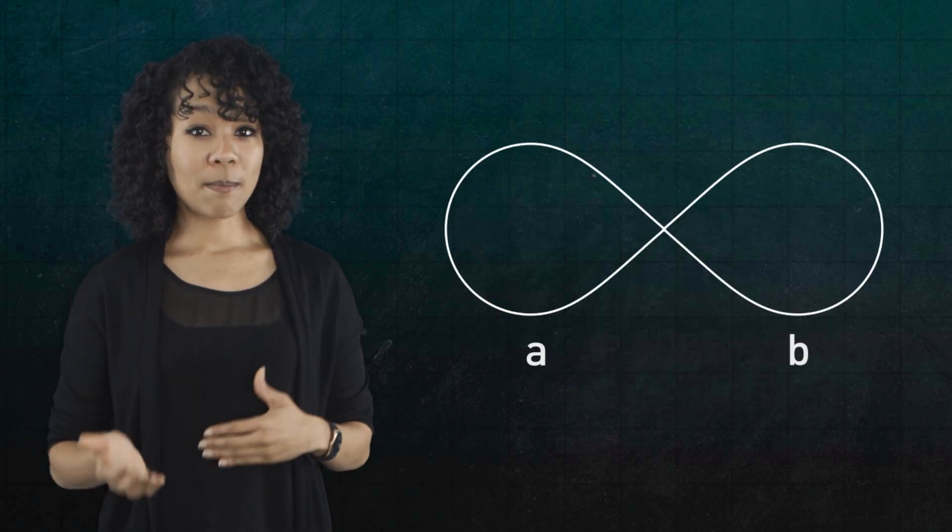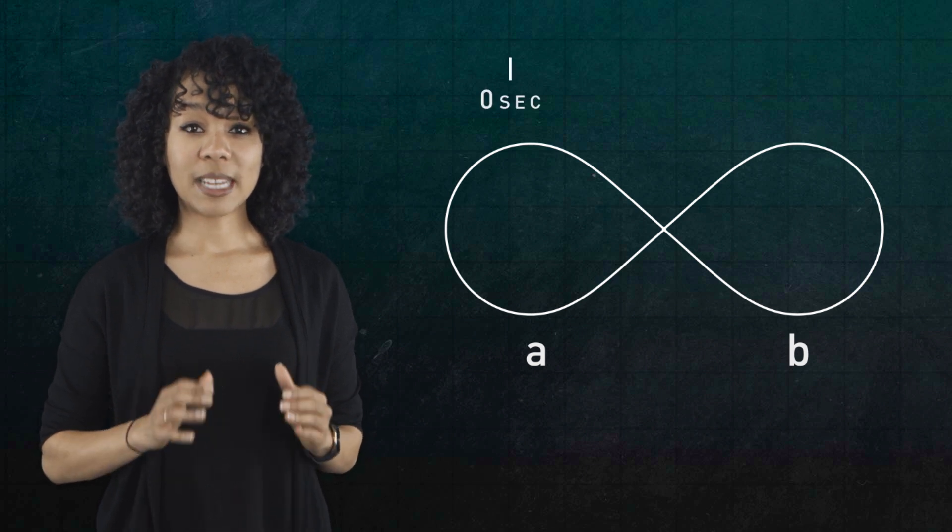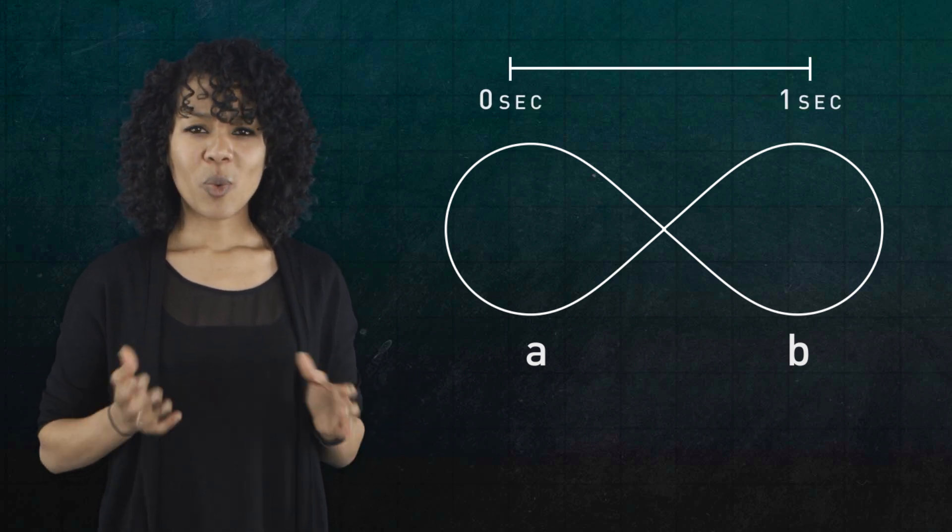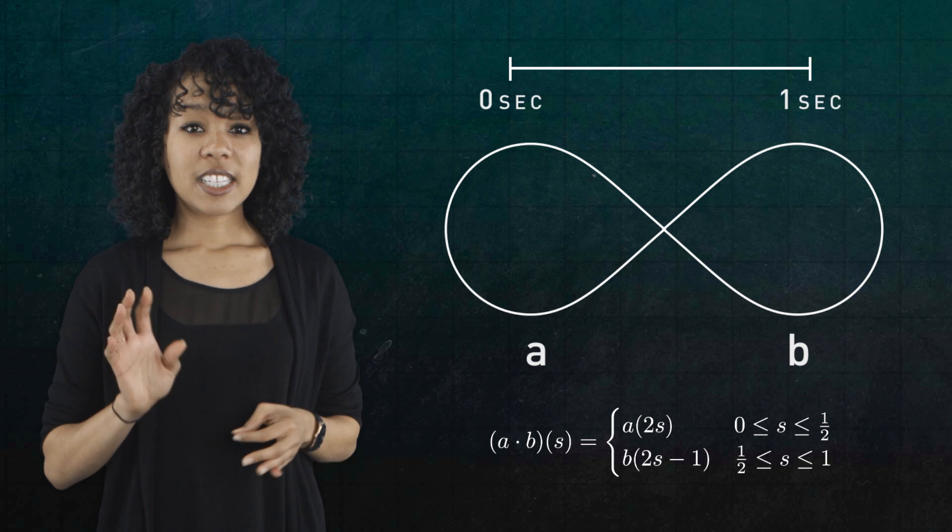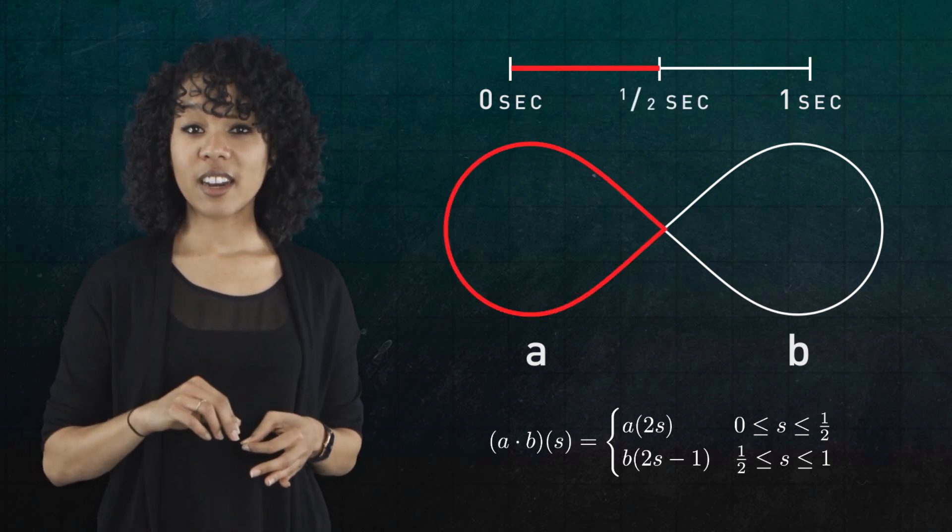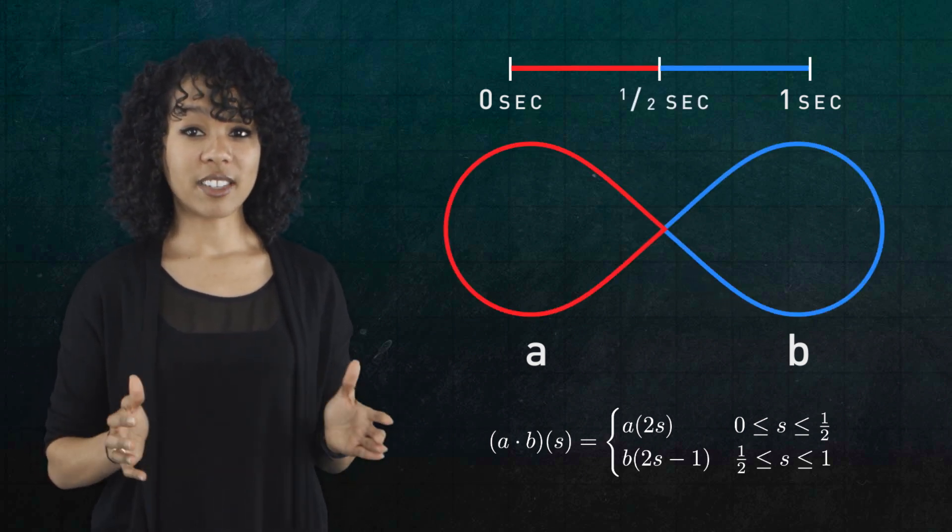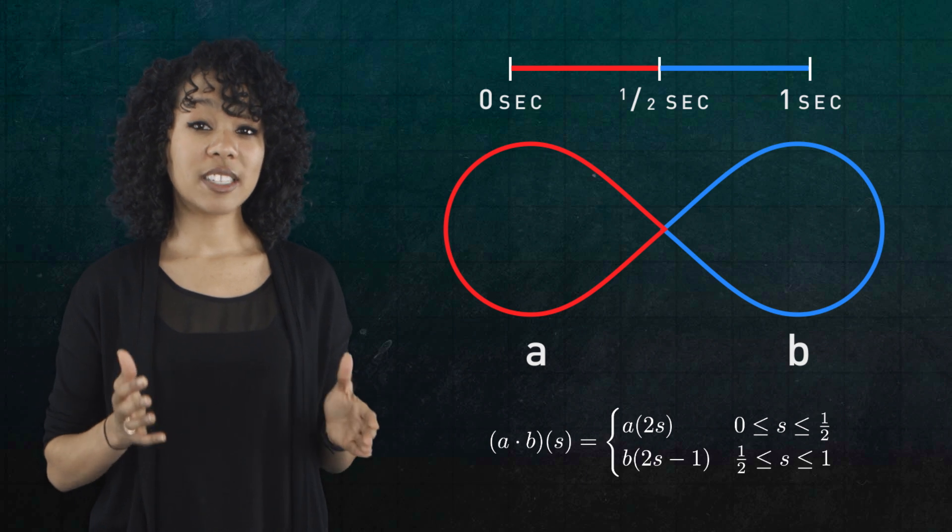And if we have two loops, A and B, that both start and stop at the same point in space, we can multiply them. What are the multiplication instructions? Simply go around A in the first half second, then go around B in the last half second. So each car travels at twice the original speed.